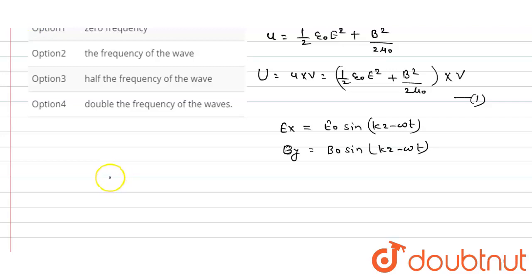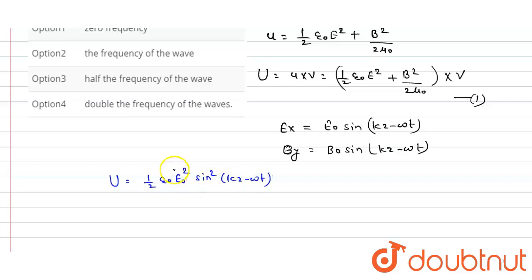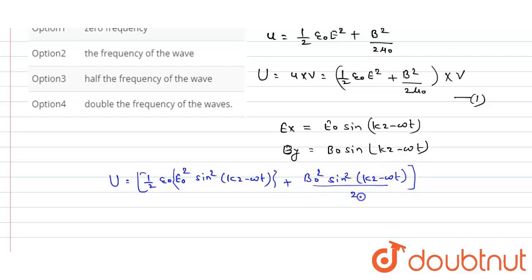Substituting these into equation one, we get: U equals half epsilon naught times E naught squared sine squared (kz minus omega t), plus B naught squared sine squared (kz minus omega t) divided by 2 mu naught, all multiplied by V. We know that sine squared theta equals (1 minus cos 2 theta) divided by 2.